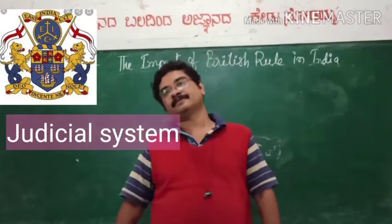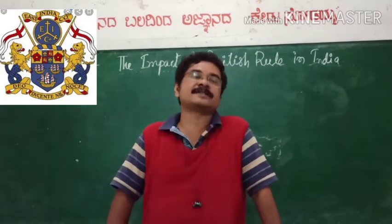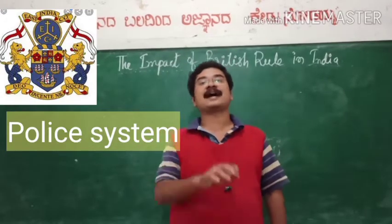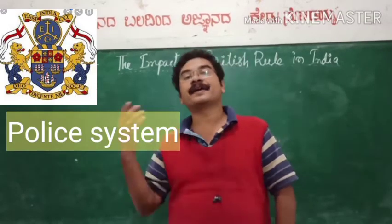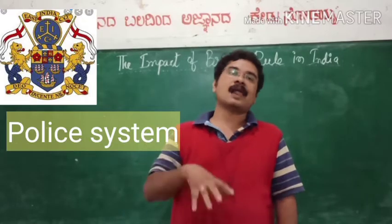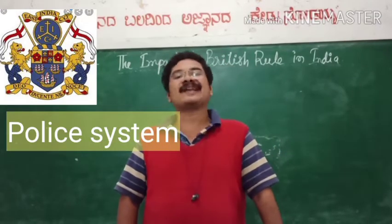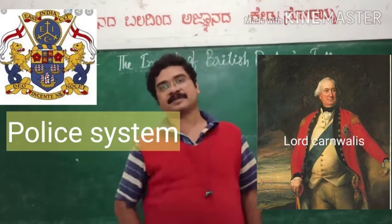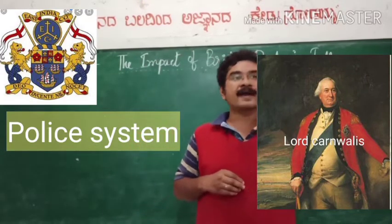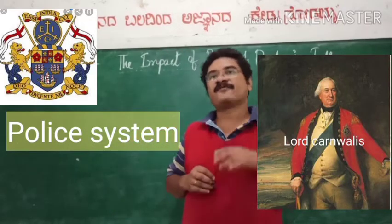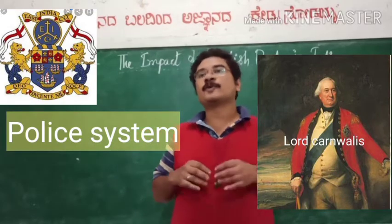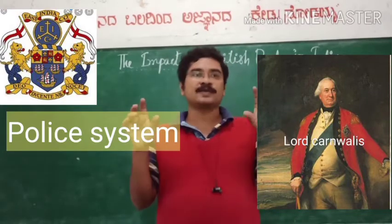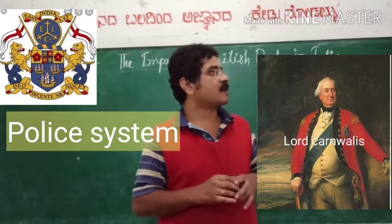After the judicial system, another system was introduced by the British East India Company: the police system. The police are in charge of maintaining the internal law and order situation. Lord Cornwallis implemented the efficient police system in India for the first time — this is also a very important point in the history of India.